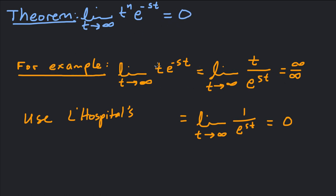For example, we can see this using L'Hôpital's rule for the special case t^1. We rewrite the limit as t / e^(st), which gives infinity over infinity, so we apply L'Hôpital's rule. That gives us 1 / (s · e^(st)), which goes to zero as t goes to infinity. For t^n, you take n derivatives using L'Hôpital's rule, eventually getting 1/(s^n · e^(st)), which also goes to zero. We'll use this frequently when computing Laplace transforms of polynomials.